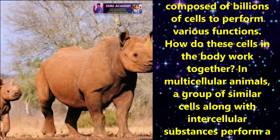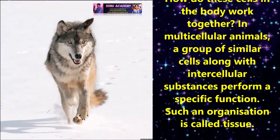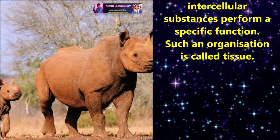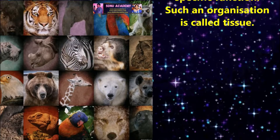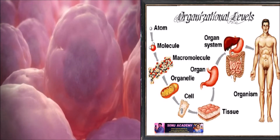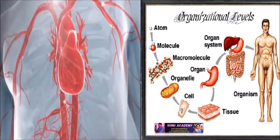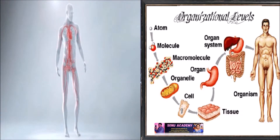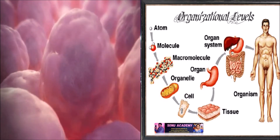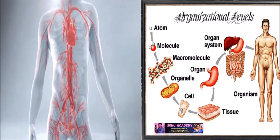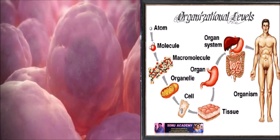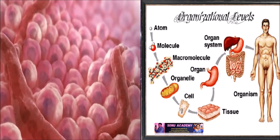How do these cells in the body work together? In multicellular animals, a group of similar cells along with intercellular substance perform a specific function. Such an organization is called tissue. All complex animals consist of only four basic types of tissues. These tissues are organized in a specific proportion and patterns to form organs like stomach, lung, heart and kidney. When two or more organs perform a common function by their physical and/or chemical interaction, they together form an organ system.